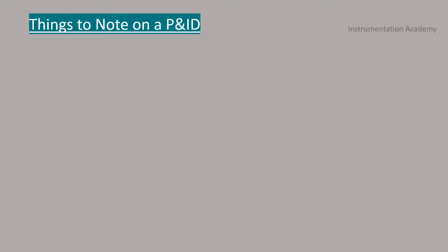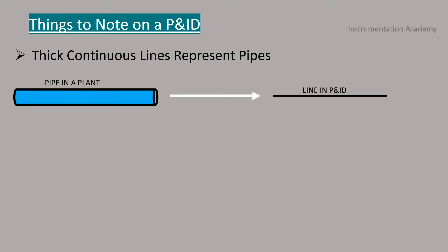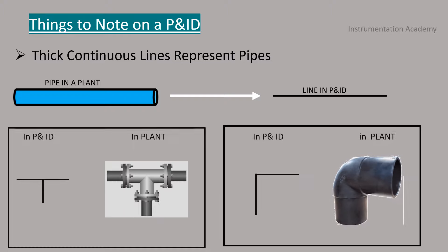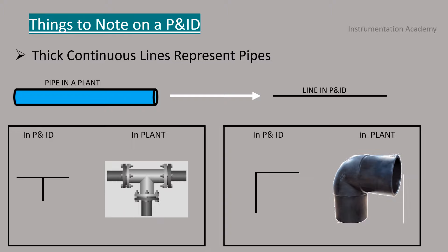On a drawing, thick continuous lines represent pipes. When two lines cross over or make a corner without any break in drawn line, it means that those two pipes are actually connected in the plant.